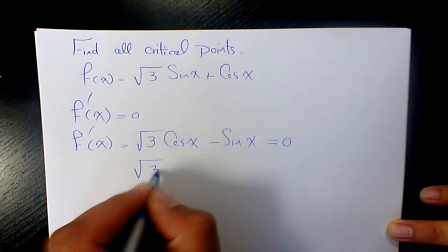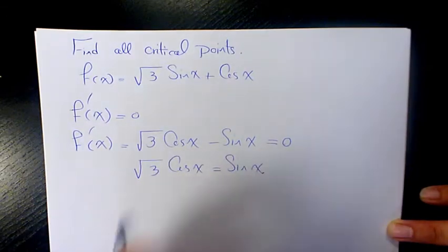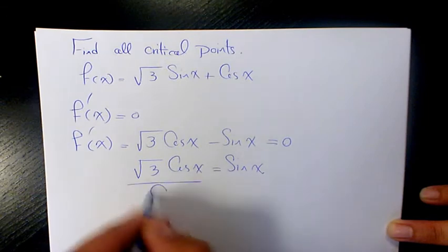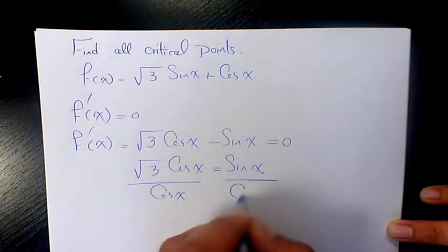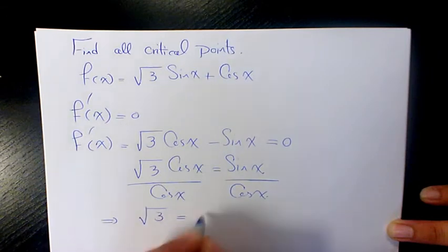So we have √3 cos x = sin x. We divide both sides by cos x. Then we get √3 = tan x.